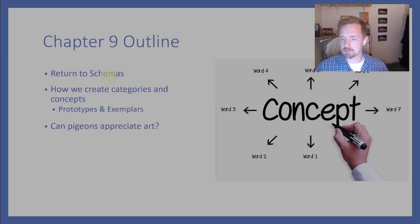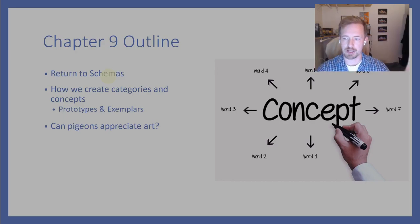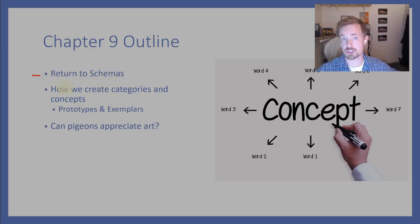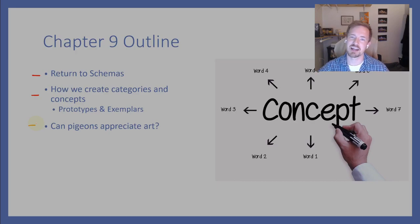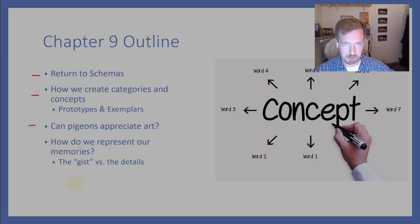I'm changing this up quite a bit from how I used to teach it. What I cover in this video will cover chapter 9, but maybe a little differently — not in the same layout as the textbook. We're going to talk about schemas, which is an idea we started in chapter 8, then more about concepts and categories, then a study about whether pigeons can appreciate art, and wrap up by talking about how we encode and retrieve this information.